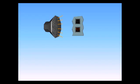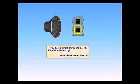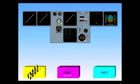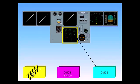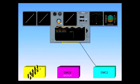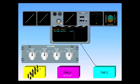You hear a single chime and see the master caution light. Cancel the master caution. Notice that the engine warning display has automatically transferred to the lower ECAM screen, and is now receiving information from DMC-2. So that you can carry out the ECAM procedure, we will bring up the lower part of the engine warning display and the switching panel for you.